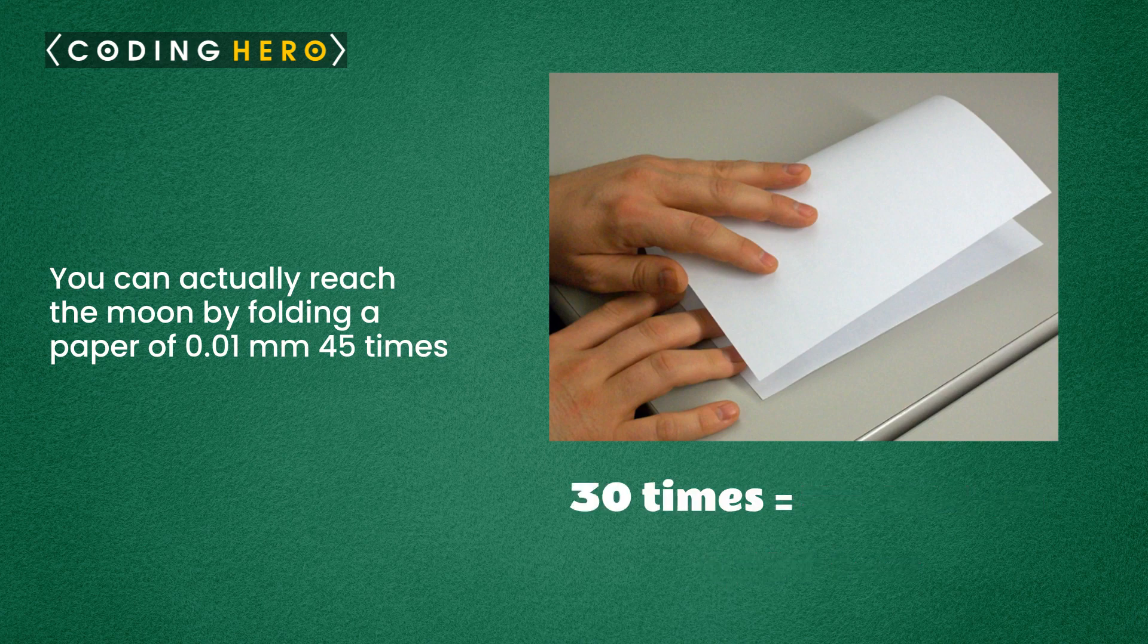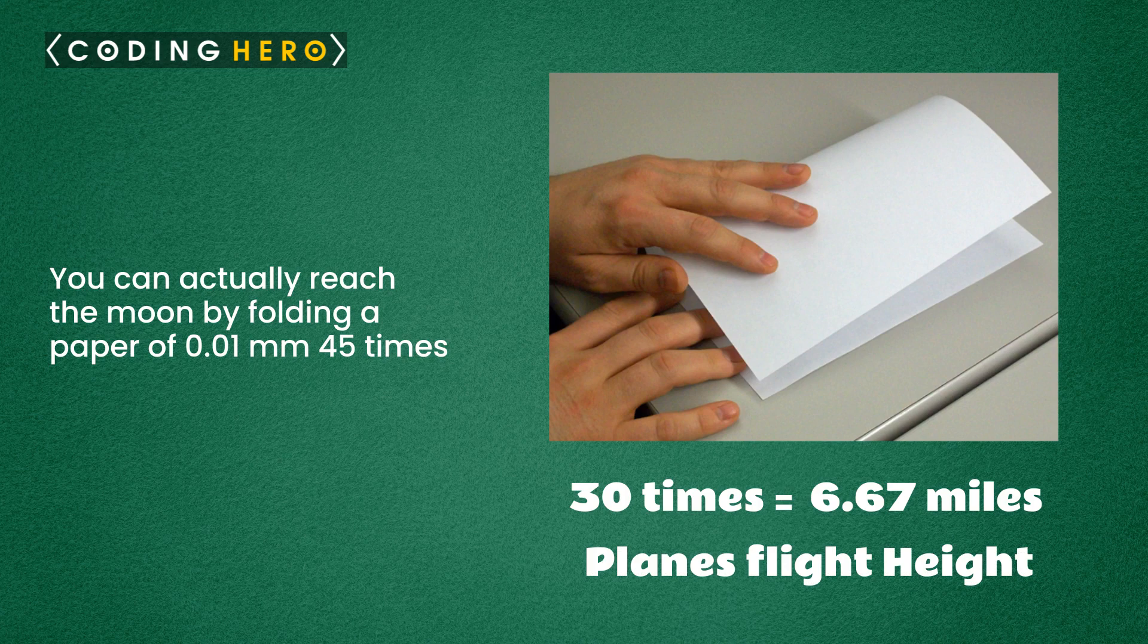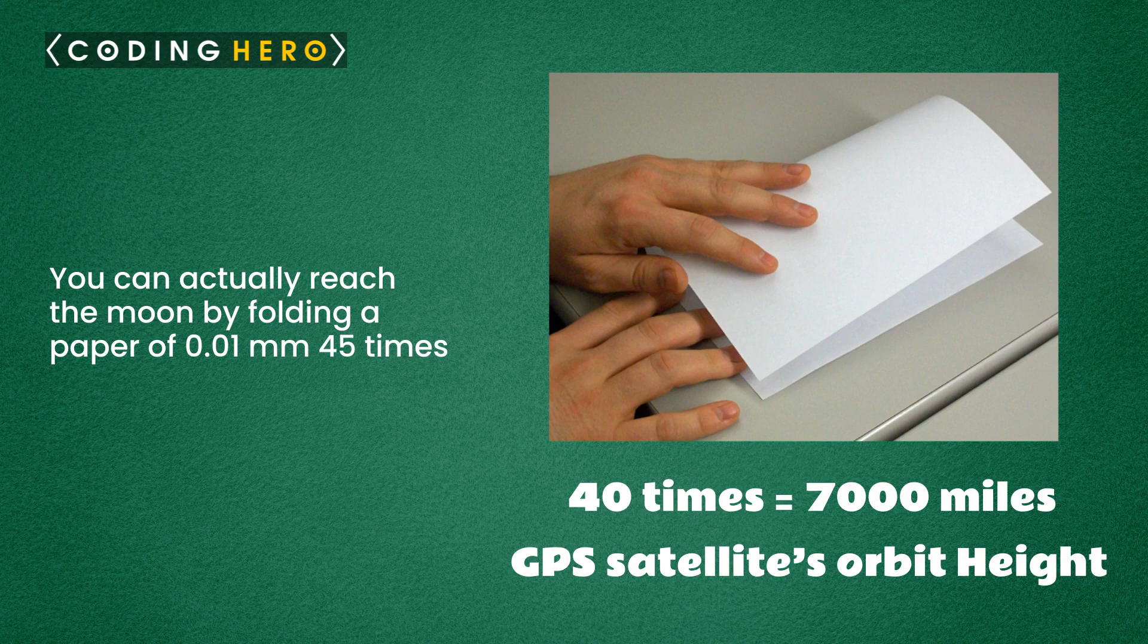If we fold the paper 30 times, the thickness reaches 6.67 miles, which is about the average height that planes fly. At 40 times, the thickness is nearly 7,000 miles or the average GPS satellites orbit.